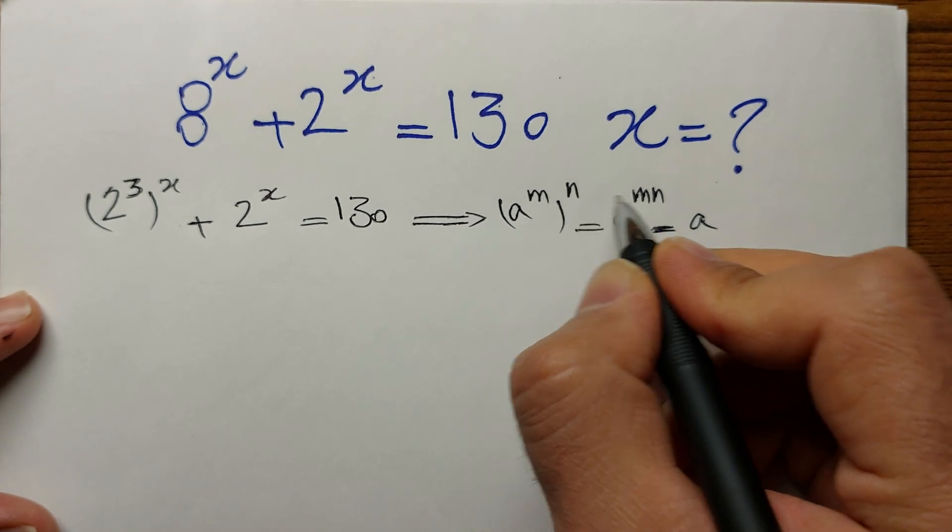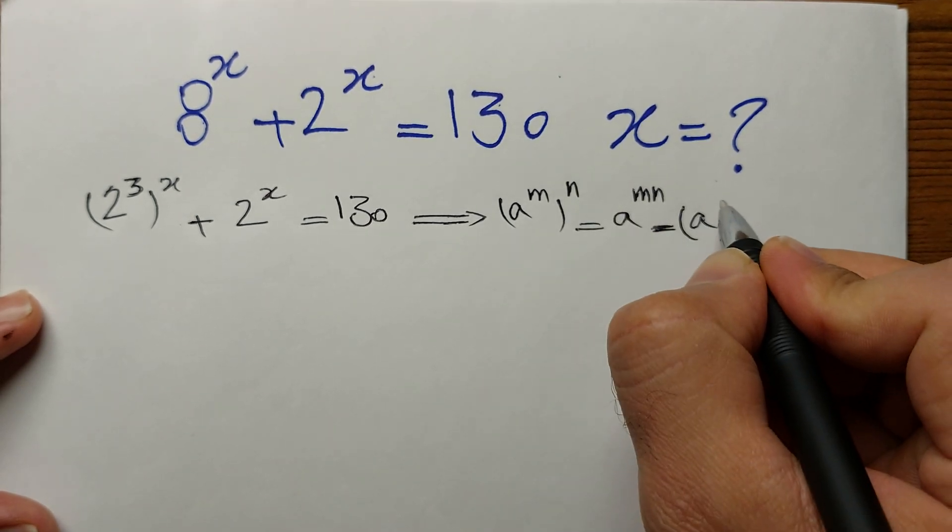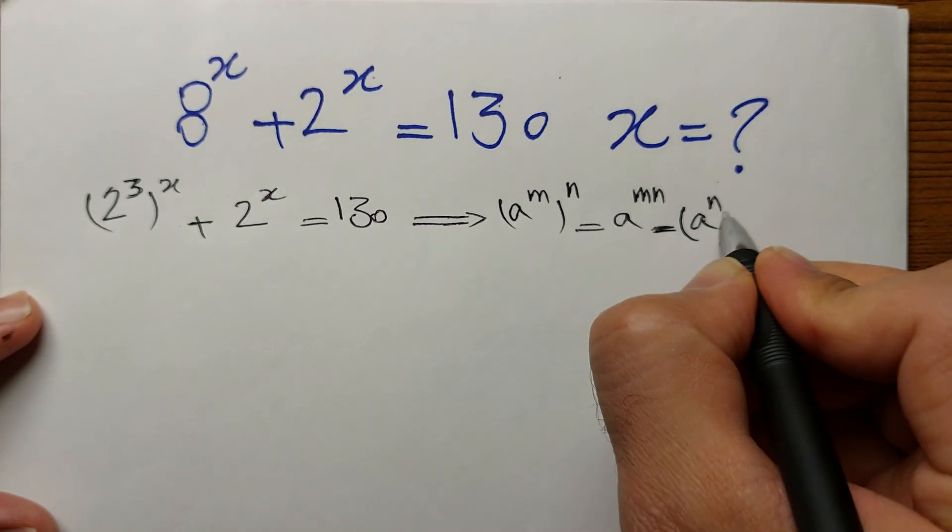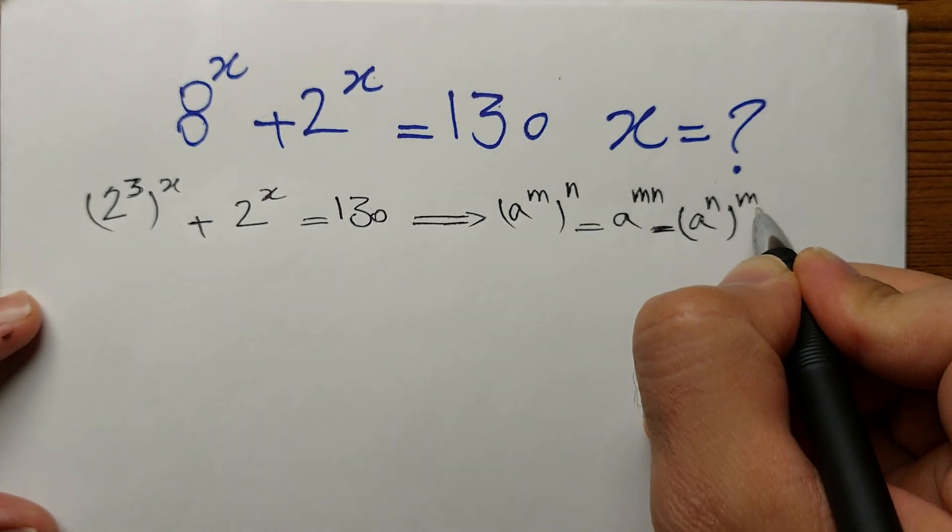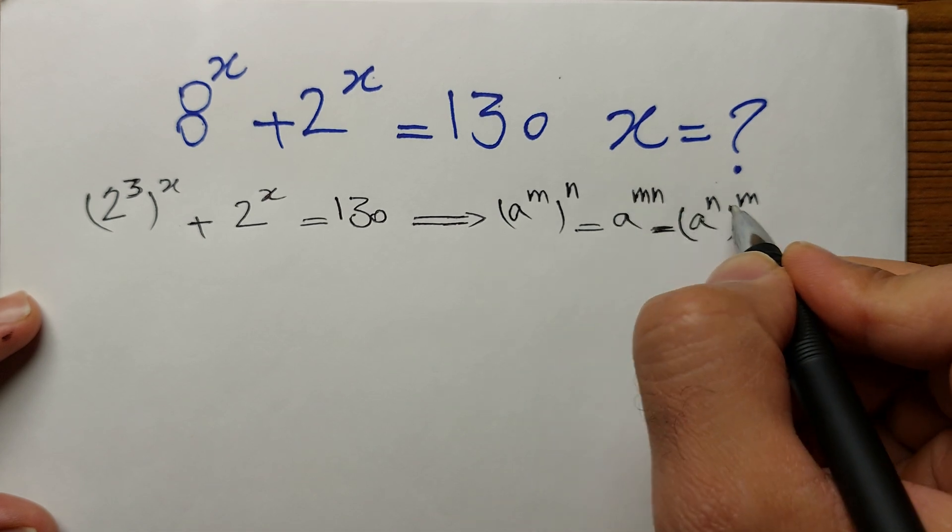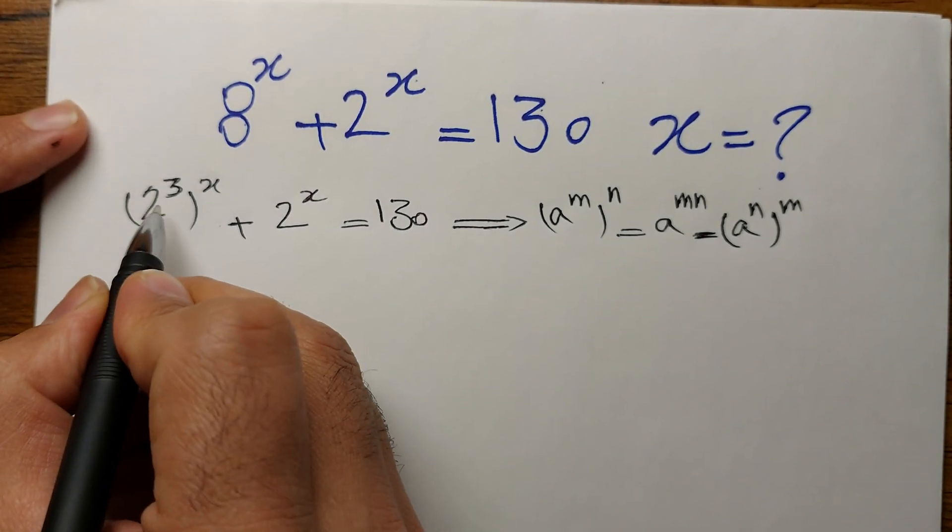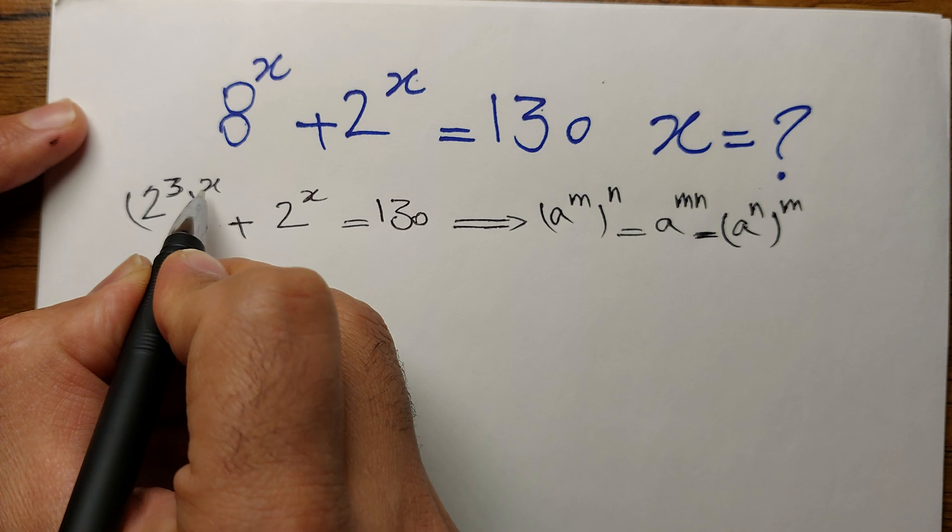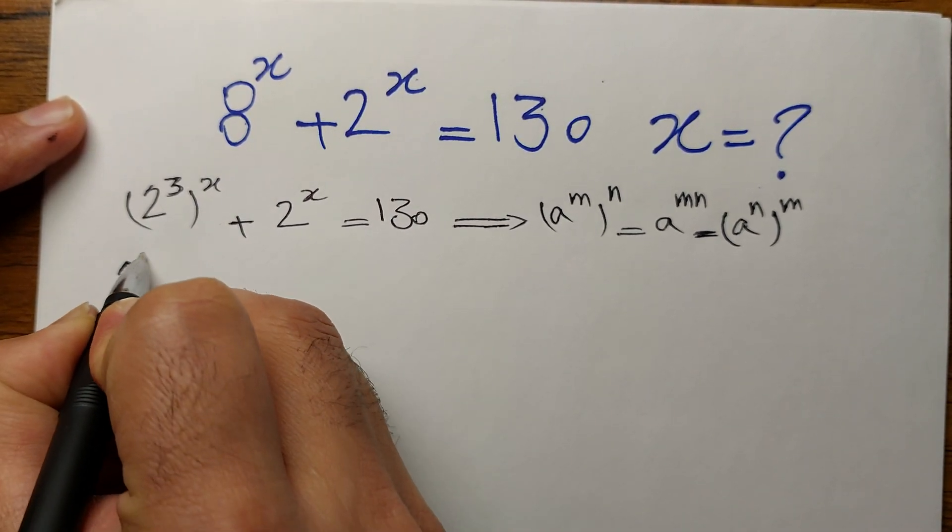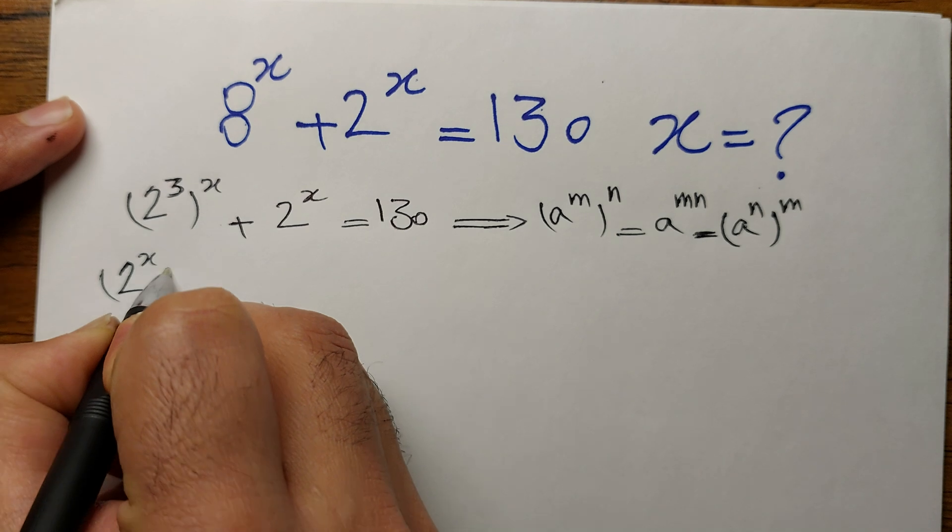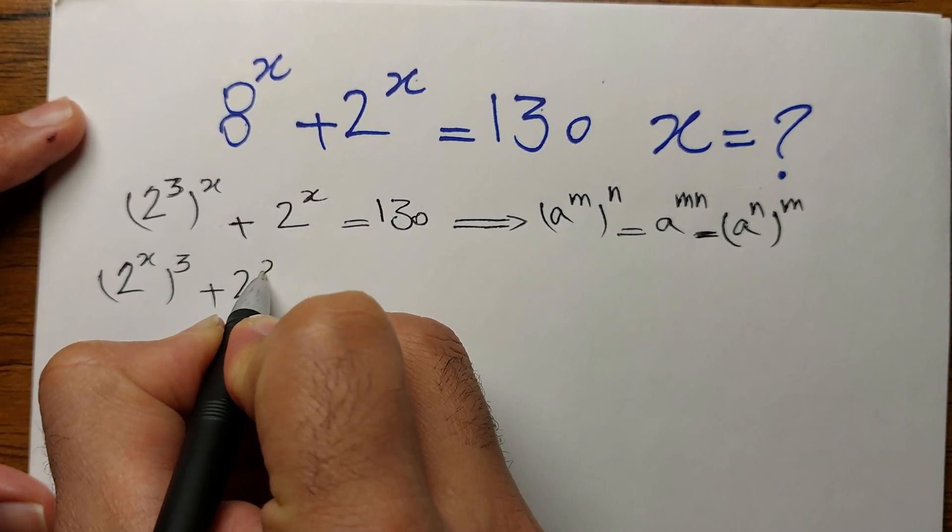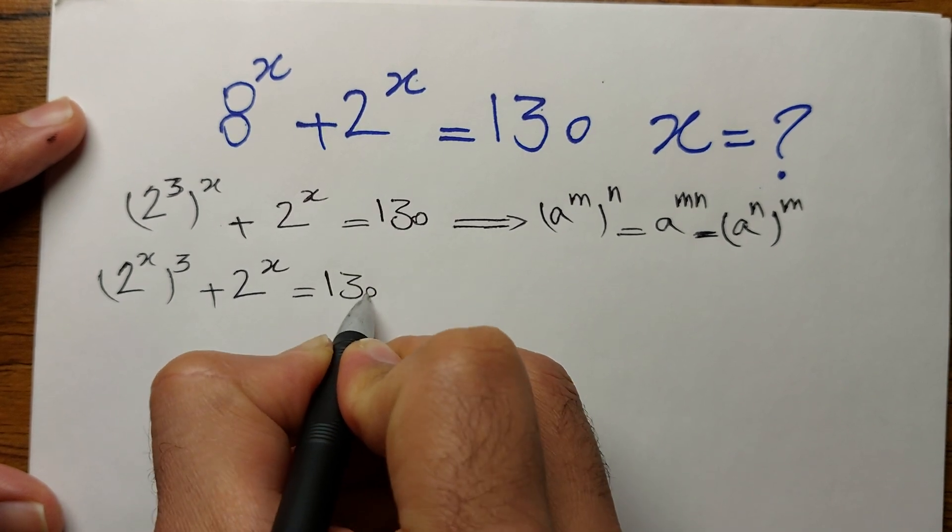Because of this relationship or property, we can rewrite it. We can reverse, replace the exponent. We can write it as a to the power of n, the whole thing to the power of m. So let's write it here as 2 to the power of x to the power of 3. Here it is the same as writing 2 to the power of x cubed plus 2 to the power of x equals 130.